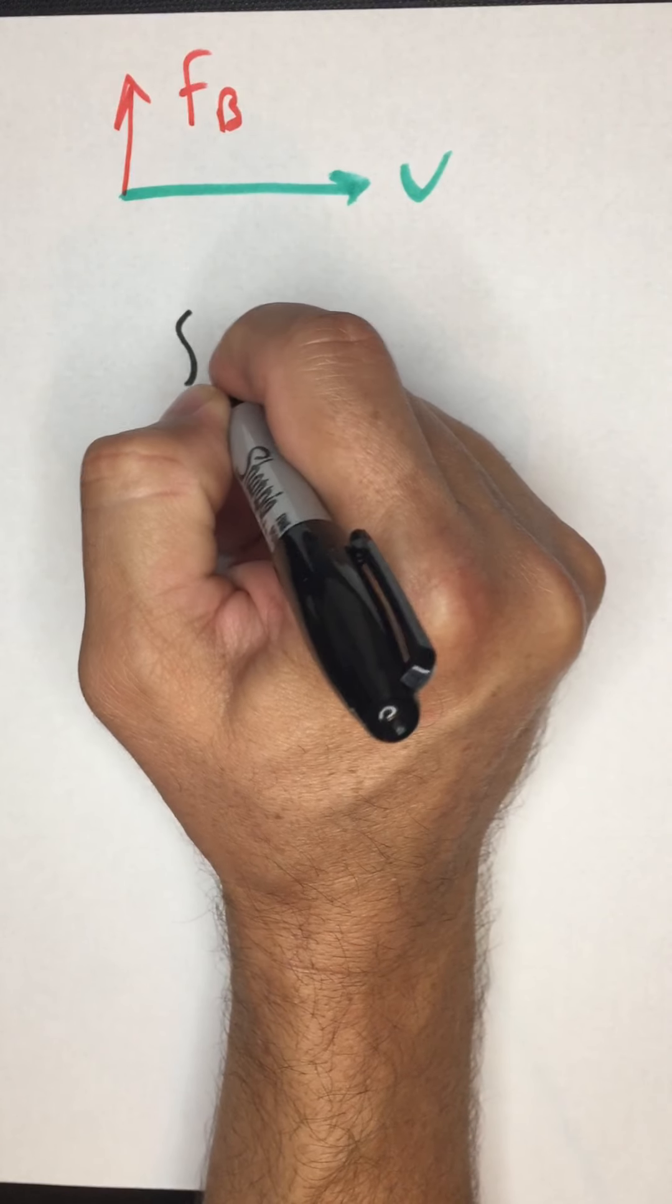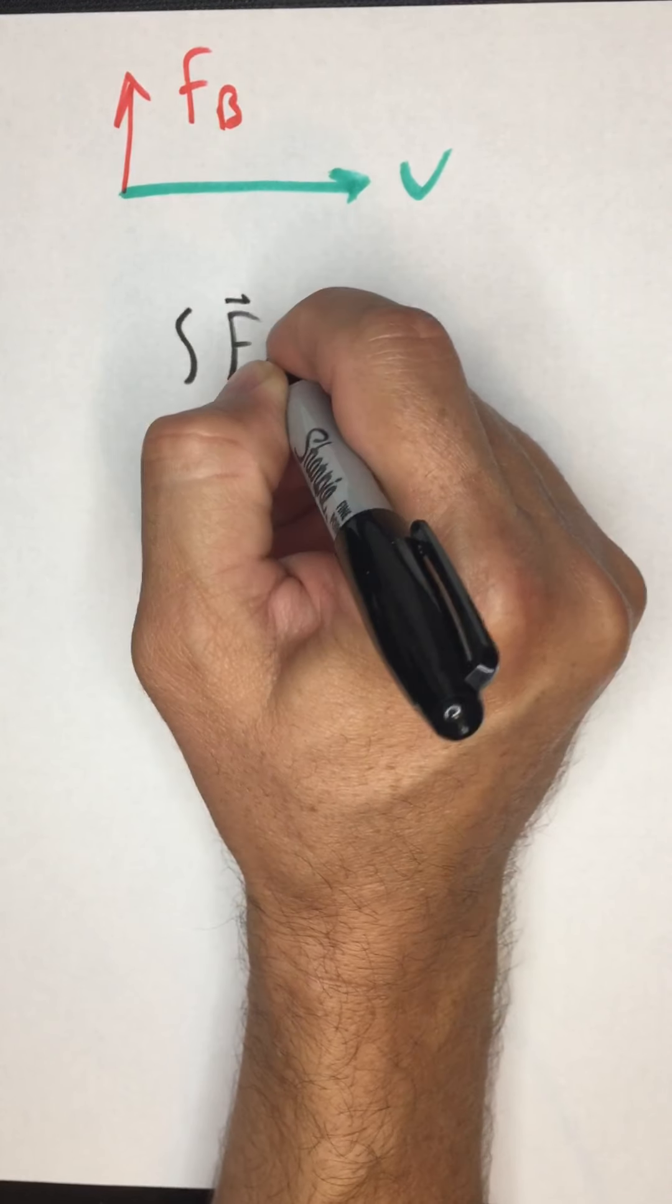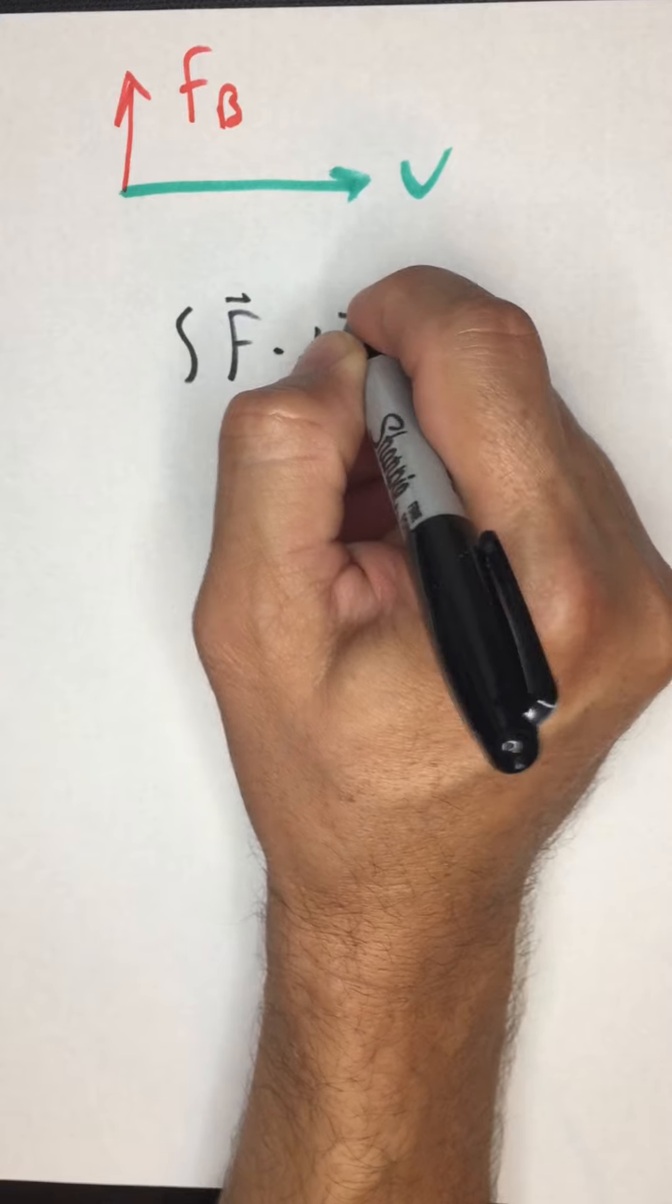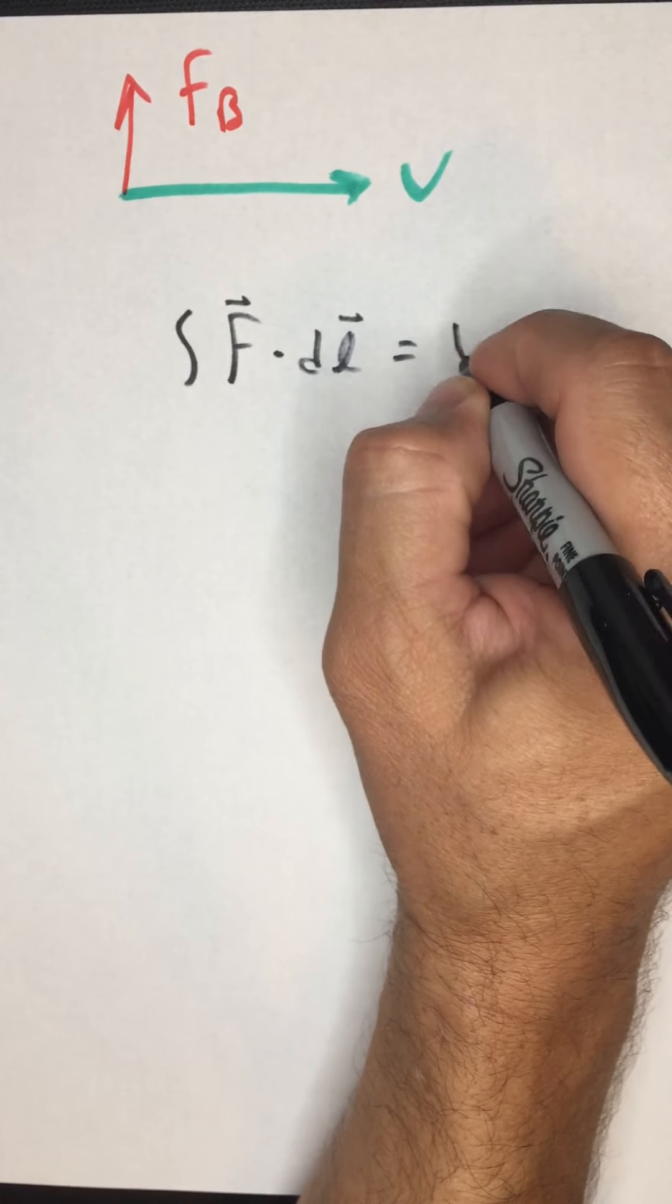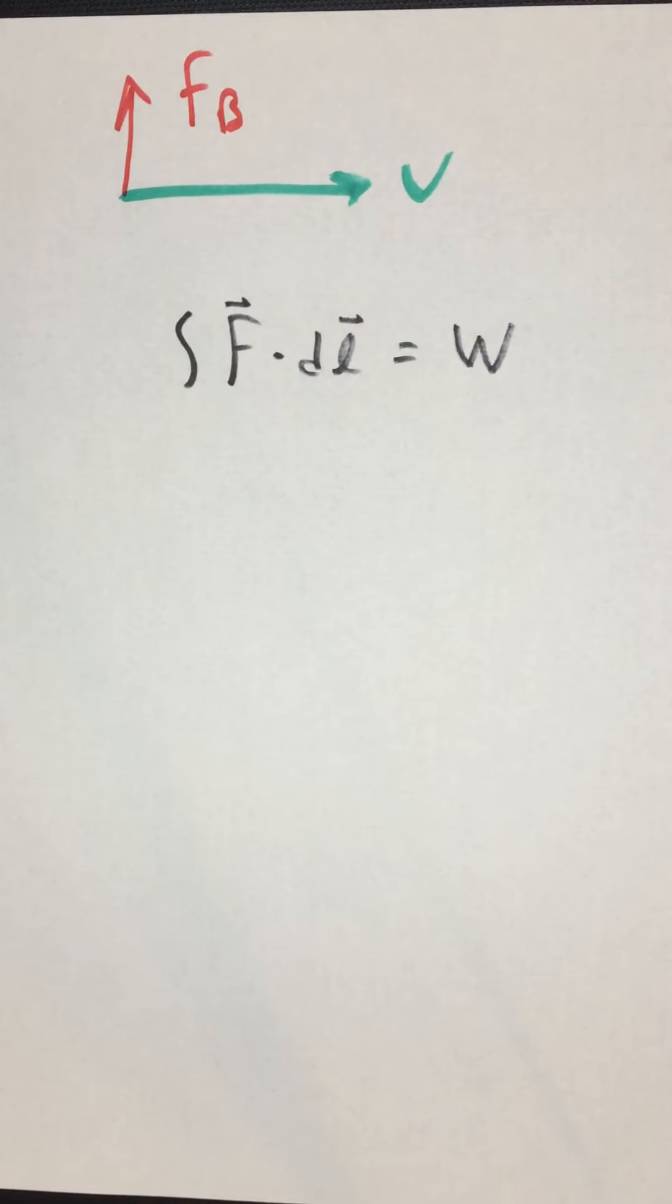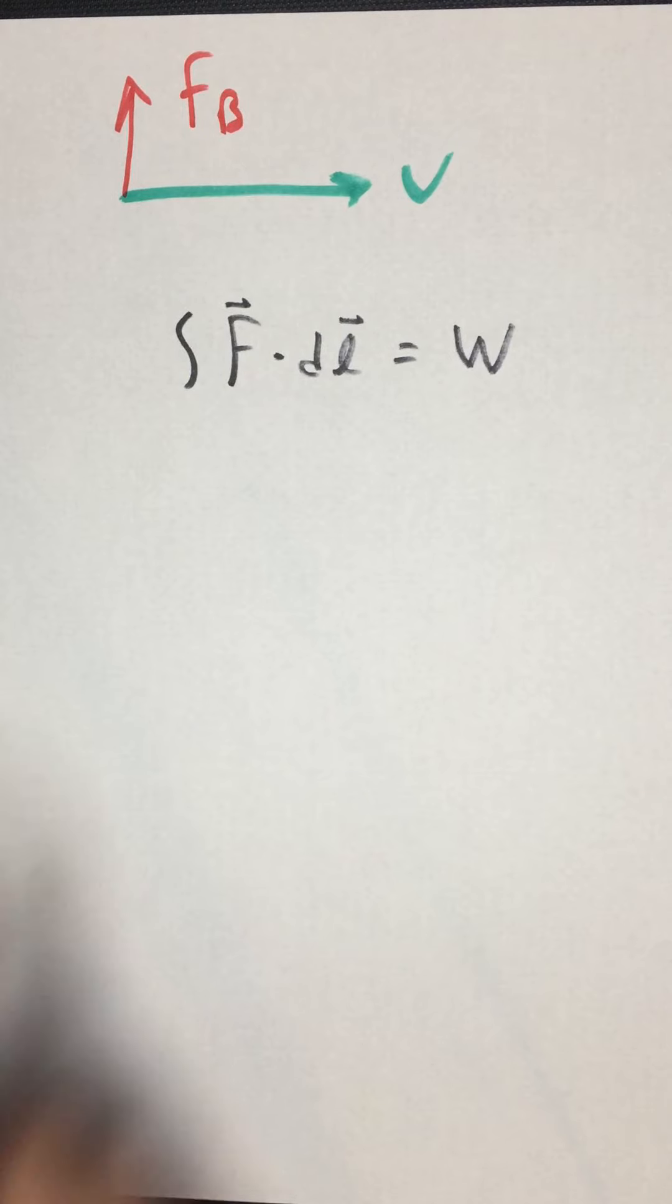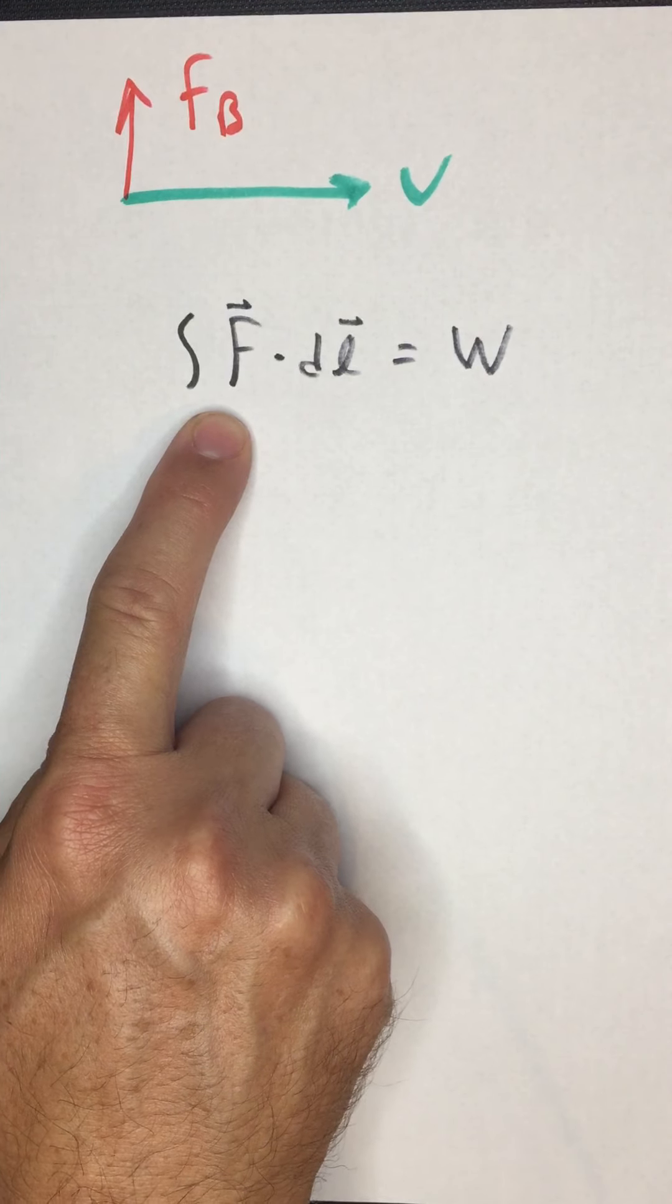Let me go through the calculus for the first one. F dot DL is equal to work. This is an equation you should have seen in physics one. F dot DL is equal to the work done on a particle by the force F,